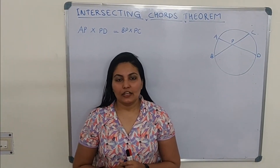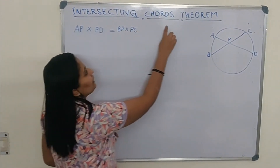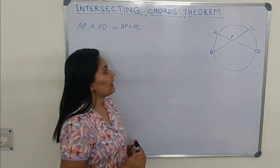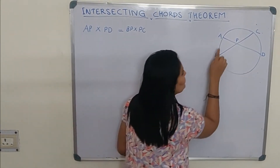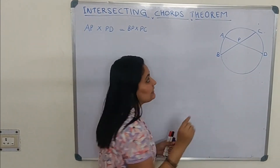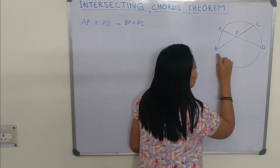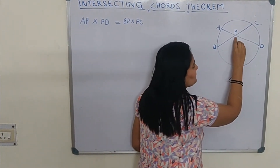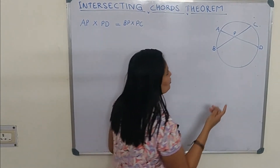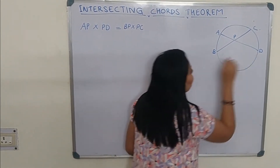Good evening friends. Today we are going to learn the Intersecting Chords Theorem. According to the Intersecting Chords Theorem, when two chords AD and BC intersect at point P, then line segment BP times line segment PC is equal to line segment AP times line segment PD.